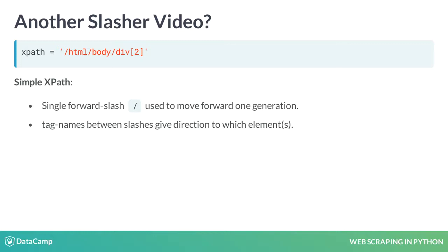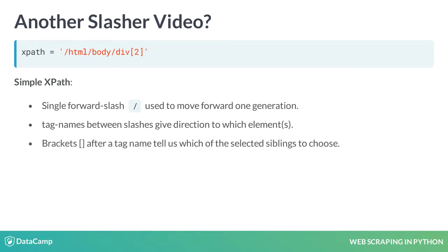What might seem unfamiliar are the brackets. These brackets are used to help specify which element or elements we want to direct to. For example, there could be several div elements which are children of the body element — that is, several div siblings. So we can use the brackets to narrow in on the div element we want.